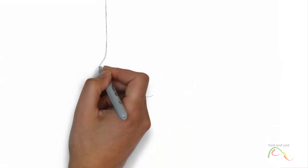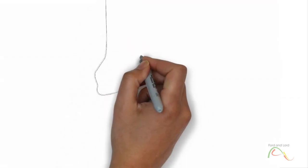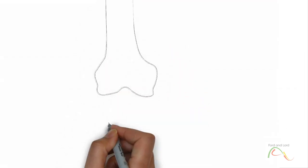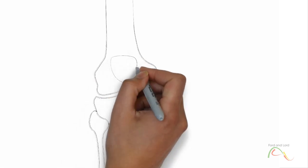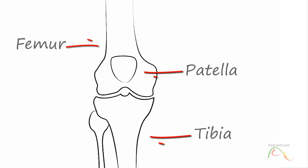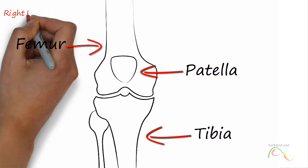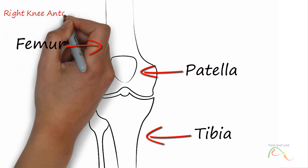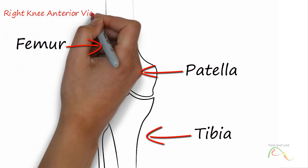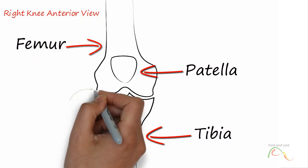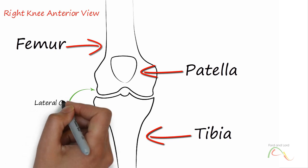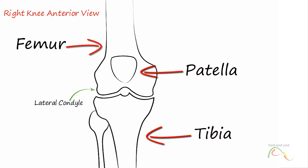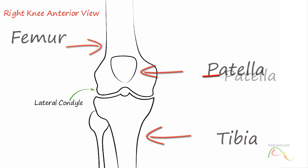The knee joint is the largest joint of the body. It is also known as the tibiofemoral joint. It is formed by three bones: the femur, the tibia, and the patella. All three bones meet and move against each other at the joint to provide necessary functionality. The bottom of the femur is articulated with the top of the tibia.